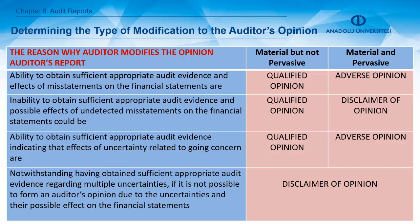The third case involves the ability to obtain sufficient appropriate audit evidence indicating that effects of uncertainty are related to going concern. If material but not persuasive, the auditor can write a qualified opinion; if material and persuasive, an adverse opinion. Notwithstanding having obtained sufficient appropriate audit evidence regarding multiple uncertainties, if it is not possible to form an opinion due to the uncertainties and their possible effect on the financial statements, the auditor can write a disclaimer of opinion. This table is very helpful to understand which type of opinion to write.